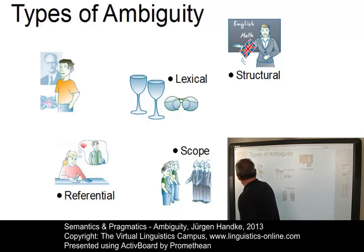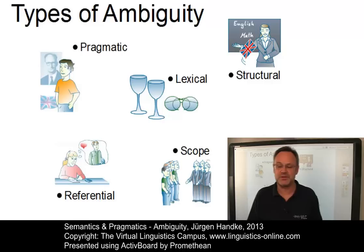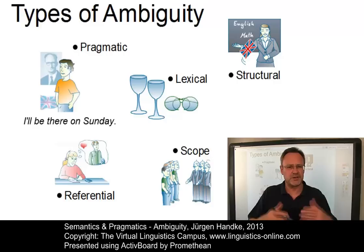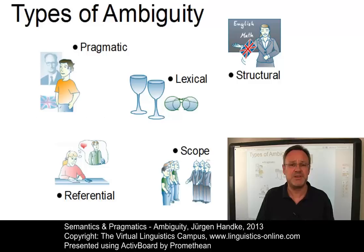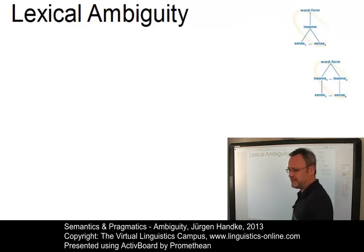The last example I would like to discuss is referred to as pragmatic ambiguity. In sentences or utterances such as 'I'll be there on Sunday,' you can understand this as a threat or as a promise. Let's now look at these ambiguity types in detail and start with lexical ambiguity.